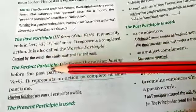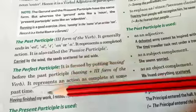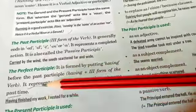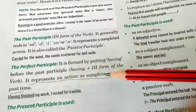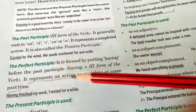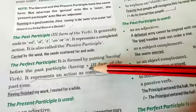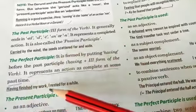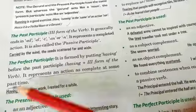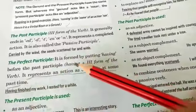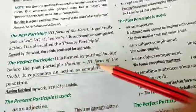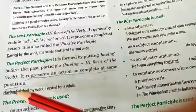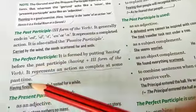The perfect participle is the last kind. Its structure is 'having' plus the third form of the verb. It represents an action completed at some past time, before a second action. For example, 'having finished my work, I rested for a while' — 'having' plus 'finished' (third form) gives us the perfect participle structure.